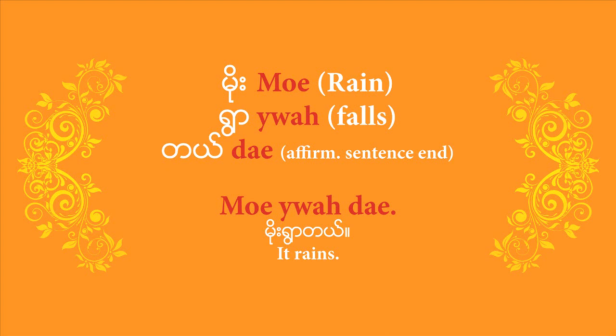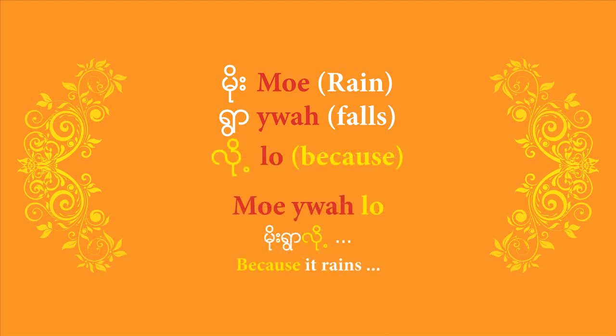How would you turn 'it rains' into 'because it rains'? You take the last word — that affirmative sentence-end particle 'de' — and replace it with 'lo'. Remember the pitch and tone. So it's not 'mo joare lo' (rising) or 'mo joare lo' (lingering). It's 'mo joare lo' (short, abrupt). That's 'because it rains'.